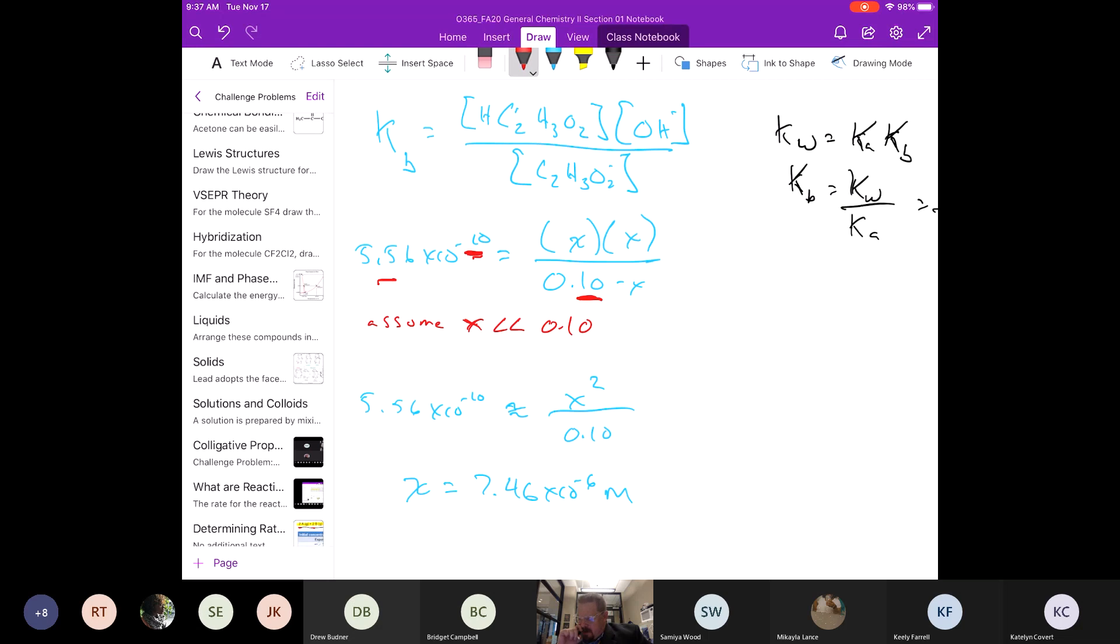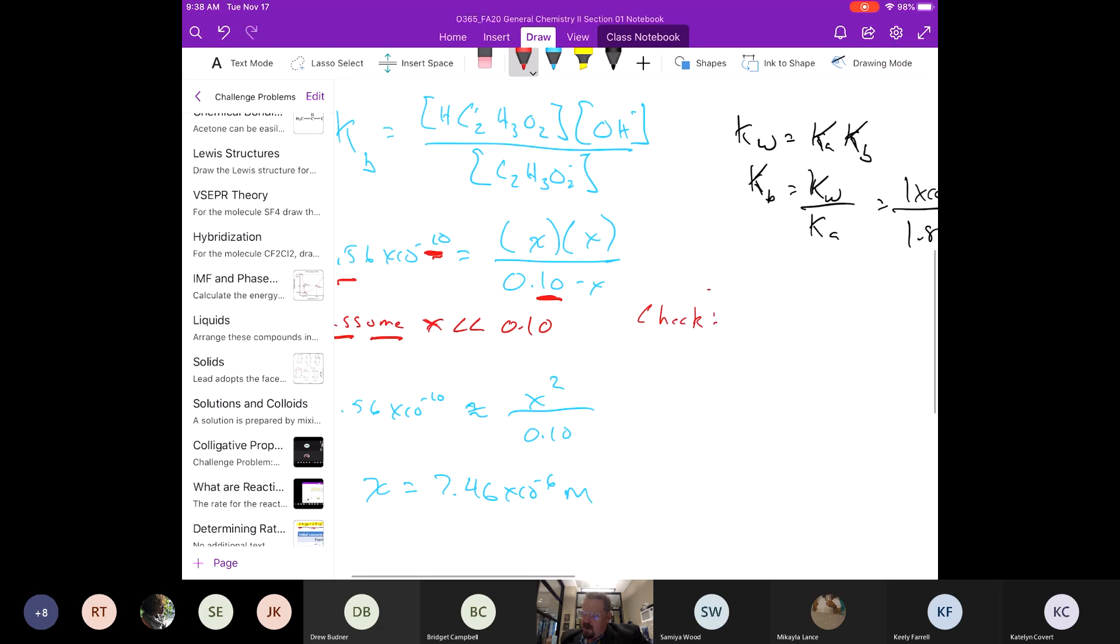Because we made an assumption, we should make sure that we're not making a mistake. So we're going to check this assumption by taking the value that we said was smaller than times 100.